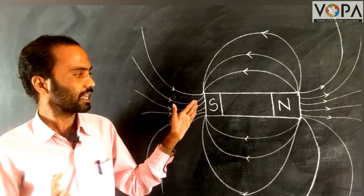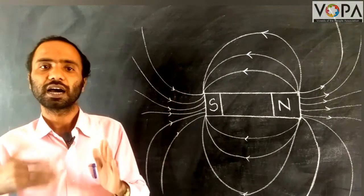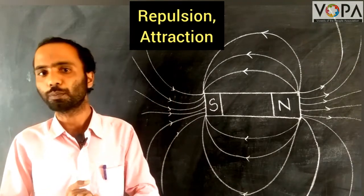Because of these magnetic lines of force, there is repulsion and attraction between the objects.